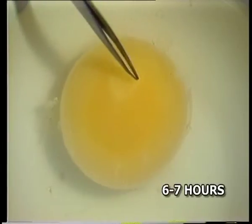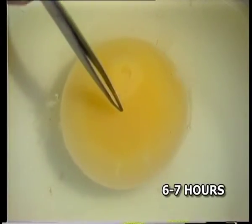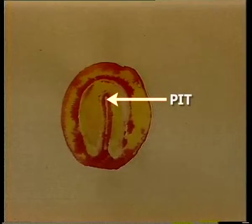During six to seven hours of incubation, the primitive streak is under formation. Initially it is short, thick, and conical in shape. After 18 to 19 hours of incubation, the primitive streak reaches its maximum length. It has the parts of the primitive pit and primitive knot.